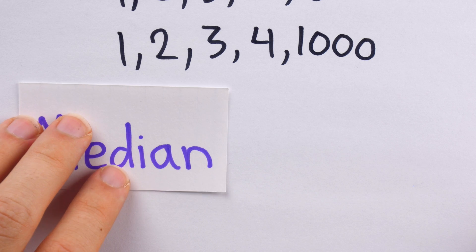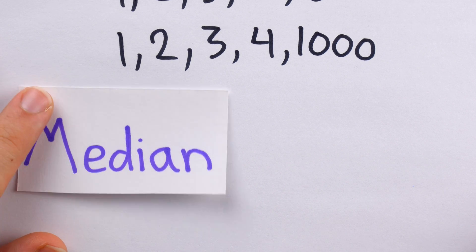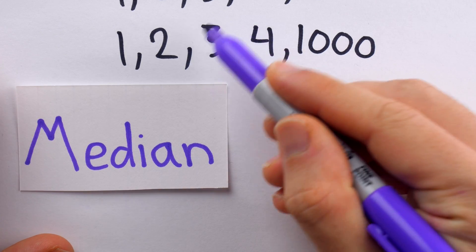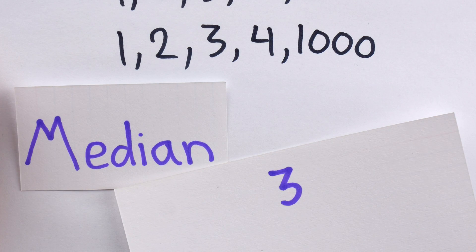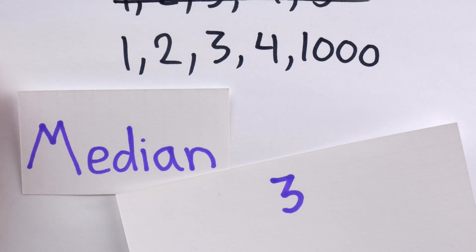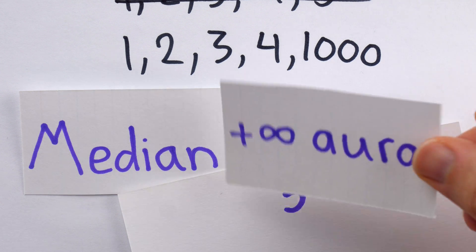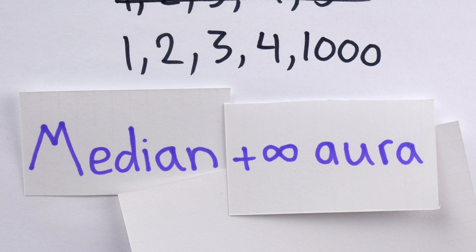Now, let's once more look at our friend the median. What's the median of this data set? Well, it's the number in the middle, which is still 3. The median has not changed a single time. And so, for the median, I say plus infinity aura.